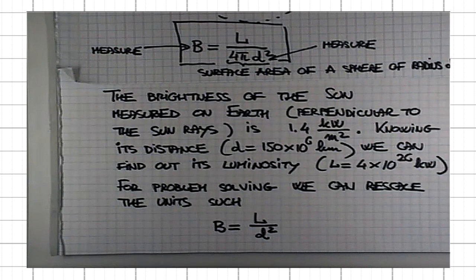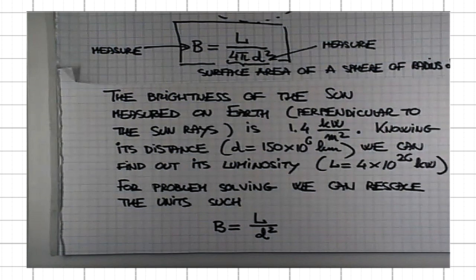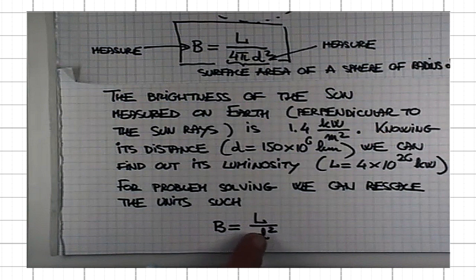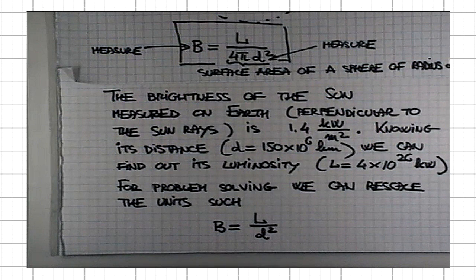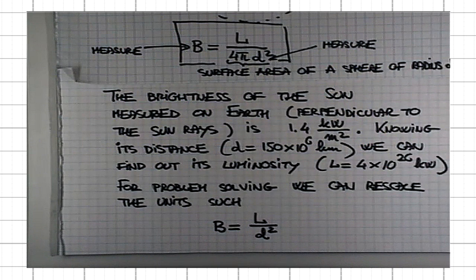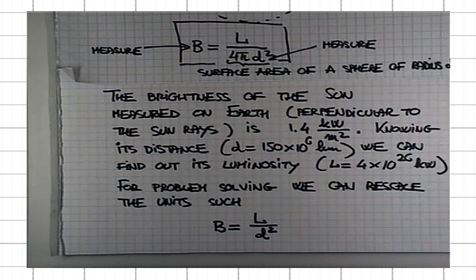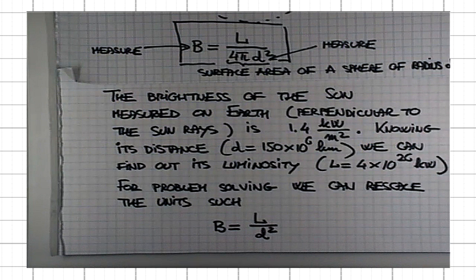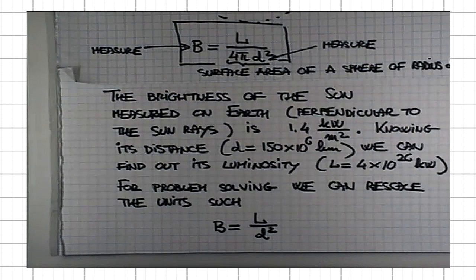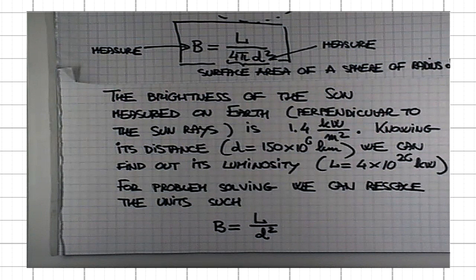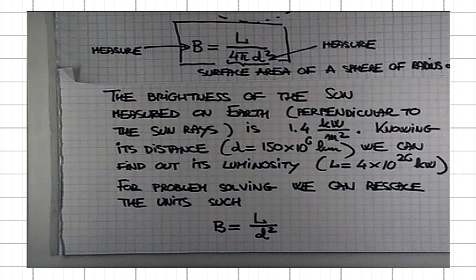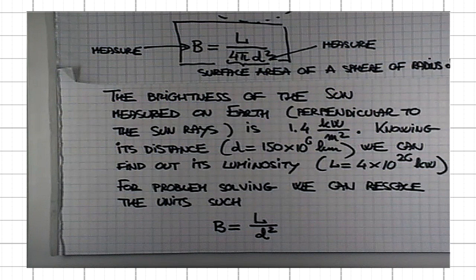Note that this is yet another example of inverse square law. We saw this dependence on distance as 1 over distance squared in the case of Newton's law of gravity, where the force of gravity between two bodies changes with distance as 1 over distance squared. If you double the distance, the force drops by a factor of 4. If you triple it, it drops by a factor of 9. If you halve the distance, it increases by a factor of 4. If you reduce the distance by a factor of 3, the force increases by a factor of 9, and so on.